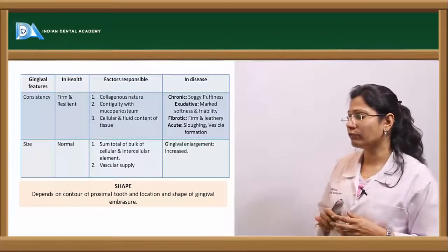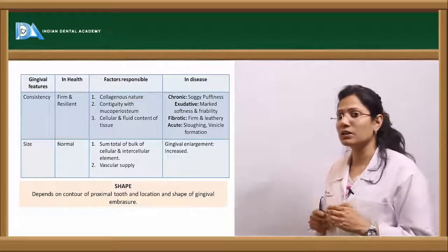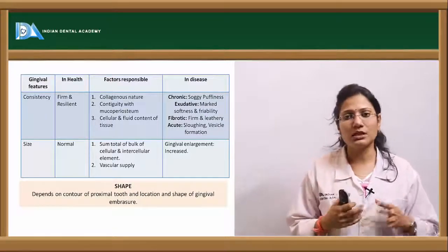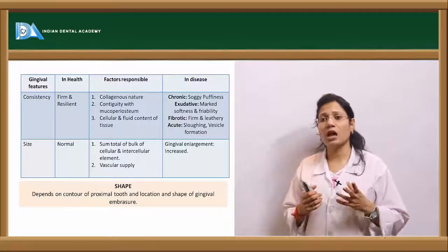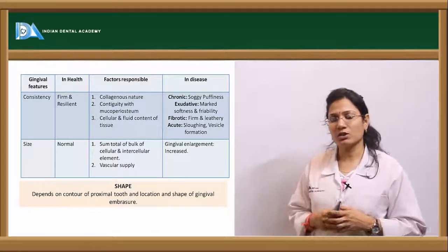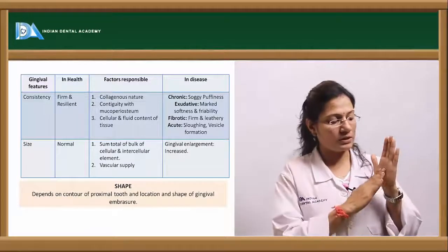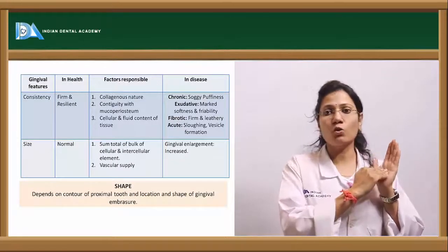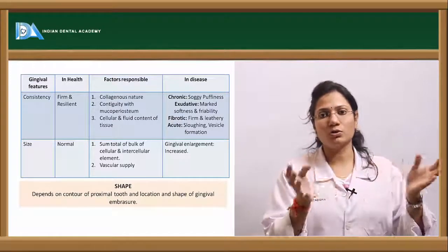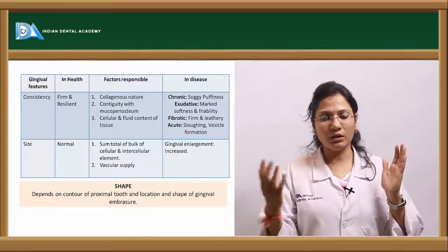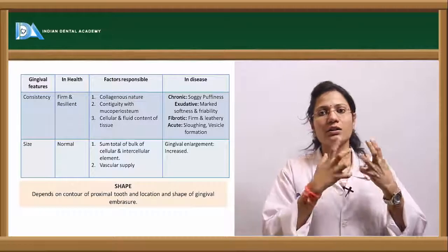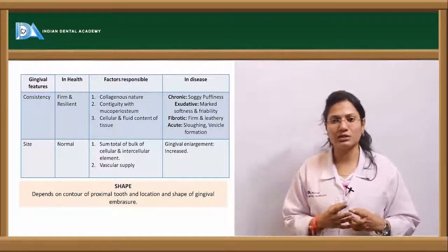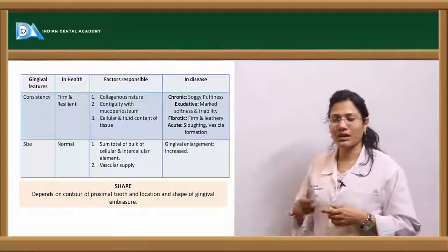Third, the cellular and fluid content of the tissues. There is a balance between the cellular and fluid content which gives the resilient property. The ground substances — that is your proteoglycans and glycoproteins — are large molecular structures with the capacity to imbibe water. When external pressure is applied, proteoglycans liberate water; when pressure is removed, they re-imbibe water, maintaining fluid balance and the resilient property of the tissue.